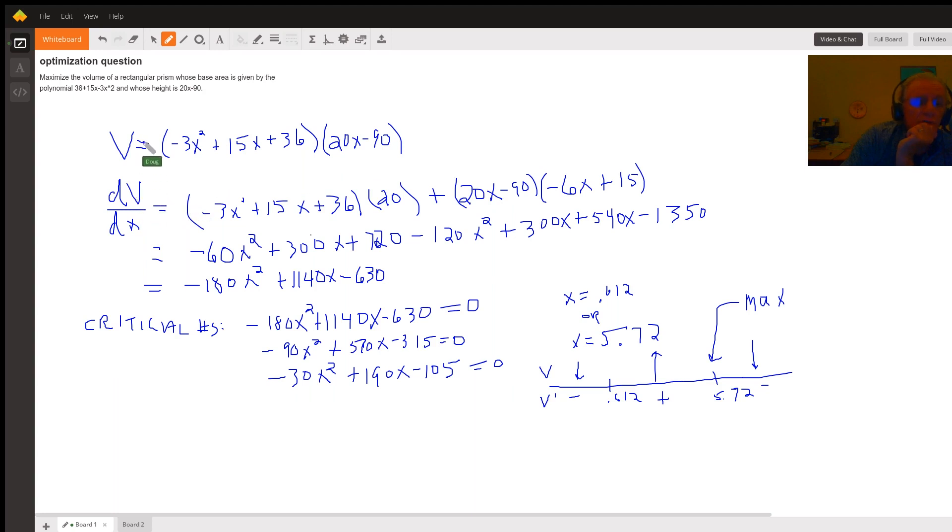We want to maximize the volume of the rectangular prism, that is what value of x will give us the maximum volume. So we'll take the derivative of v with respect to x.